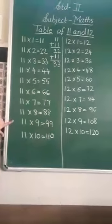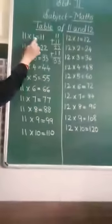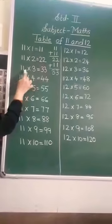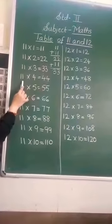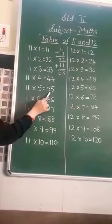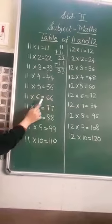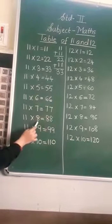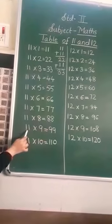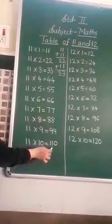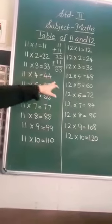Once again we will recite the table of 11. 11 ones are 11, 11 twos are 22, 11 threes are 33, 11 fours are 44, 11 fives are 55, 11 sixes are 66, 11 sevens are 77, 11 eights are 88, 11 nines are 99, 11 tens are 110.